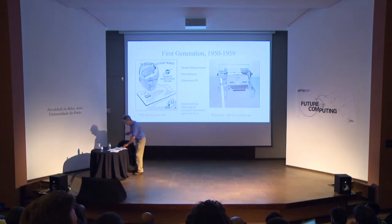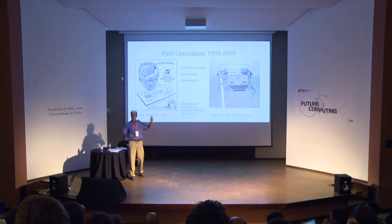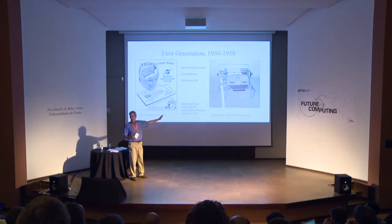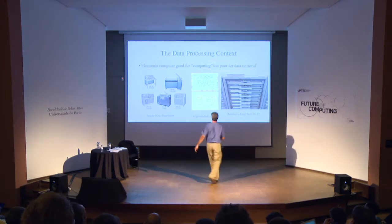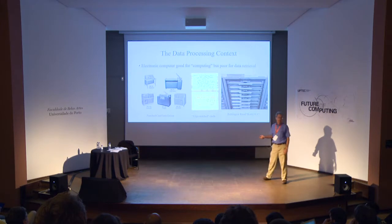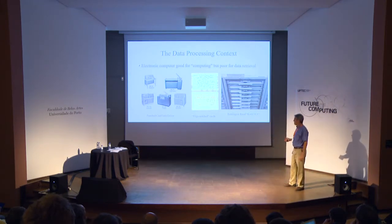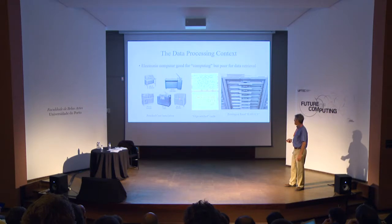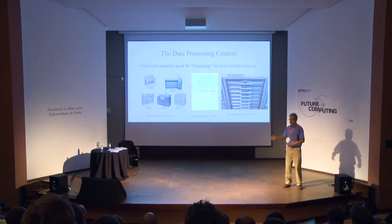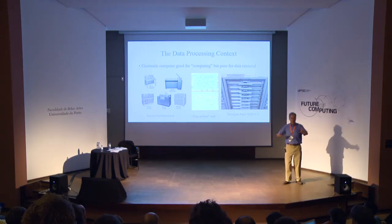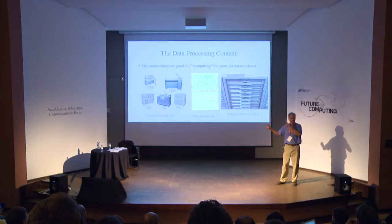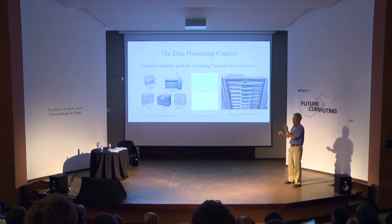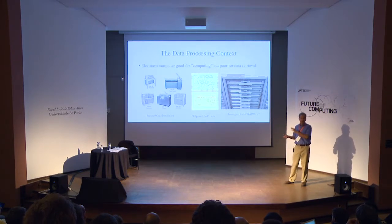So we begin with the first generation — vacuum tubes as an obvious limitation. IBM would sell a suite of machines: a keypunch, sorter, duplicator, collator, and interpreter. You'd have a room full of these machines, with people carrying decks of cards from place to place. In a sense, the computer replaced that room — with the person becoming the program. That was IBM's business right into the 1960s.